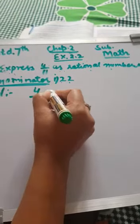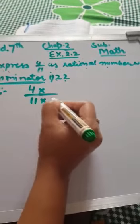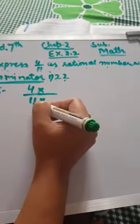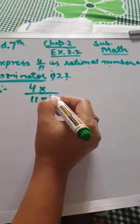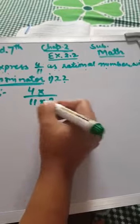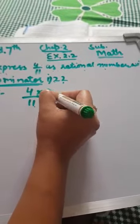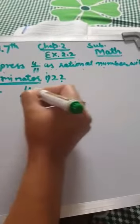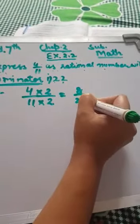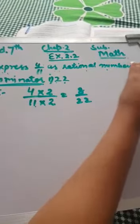Same process as sum number 1 — I will think of the number which will make 11 into 22. What is that number? 22 comes in the table of 11 at 2: 11 twos are 22. So if I multiply my denominator by 2, I will also multiply my numerator by 2. So my answer will be 8 over 22.